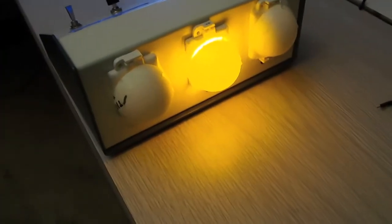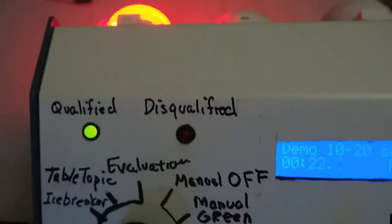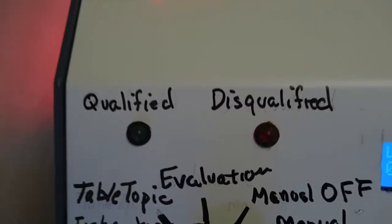And then the yellow light comes on at 15 seconds, and then the red light comes on. If you go past the grace period then you're disqualified.